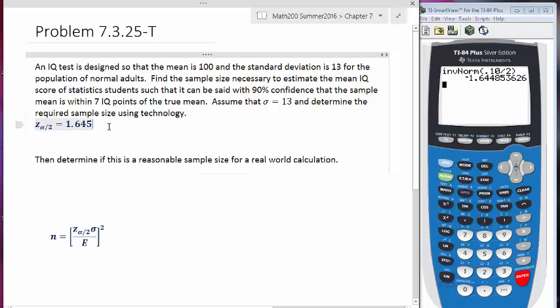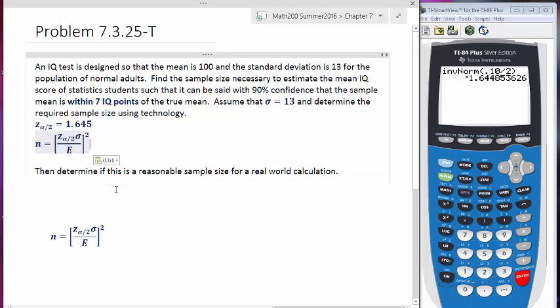So we have Z sub alpha over 2, we have sigma given here, and then we just need a margin of error. When they say within seven IQ points, that's going to be our margin of error. So now that we have that information, we're just going to use our formula and fill in all the different components.